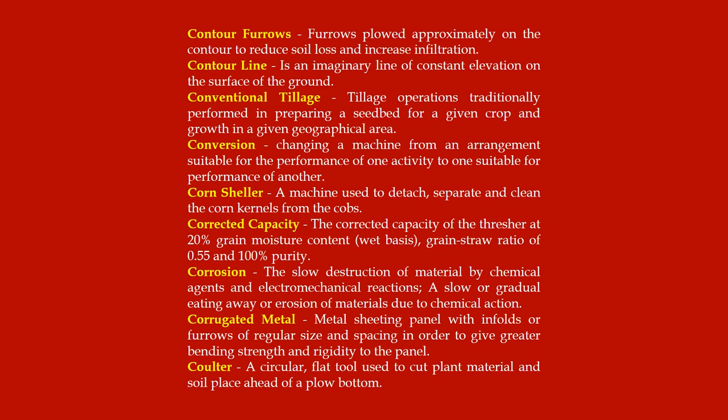Conversion: changing a machine from an arrangement suitable for the performance of one activity to one suitable for performance of another. Corn sheller: a machine used to detach, separate and clean the corn kernels from the cobs. Corrected capacity: the corrected capacity of the thresher at 20% grain moisture content wet basis, grain-to-straw ratio of 0.55 and 100% purity.